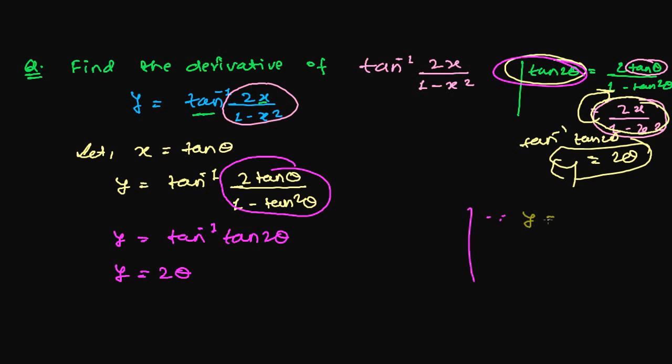When our y is equal with tan inverse of tan 2 theta, now since it is inverse it will go left hand side. Then it will be tan y equals to tan 2 theta.